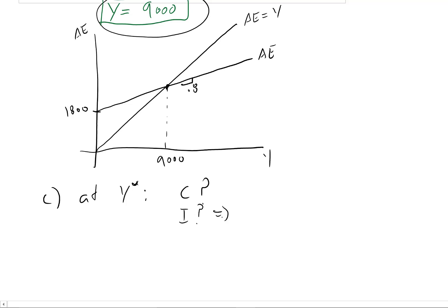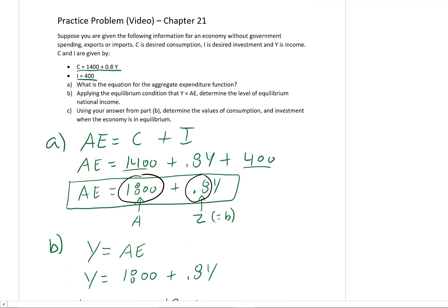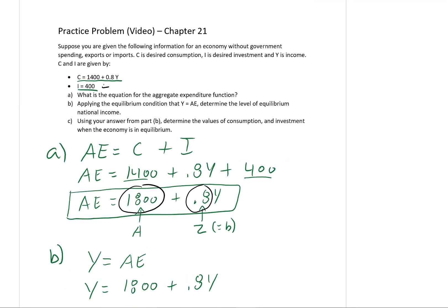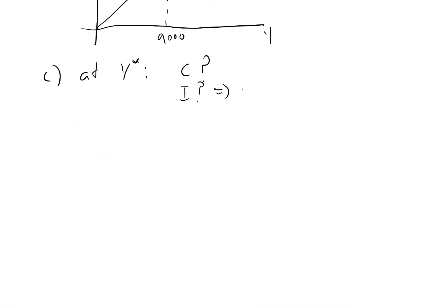Investment is really easy. So investment, we know that it's autonomous. All our investment in this model, because we're given above in the question, we're just told no matter what the level of Y, investment is 400. So we know right away the answer to part of this question is just 400 because investment is autonomous.